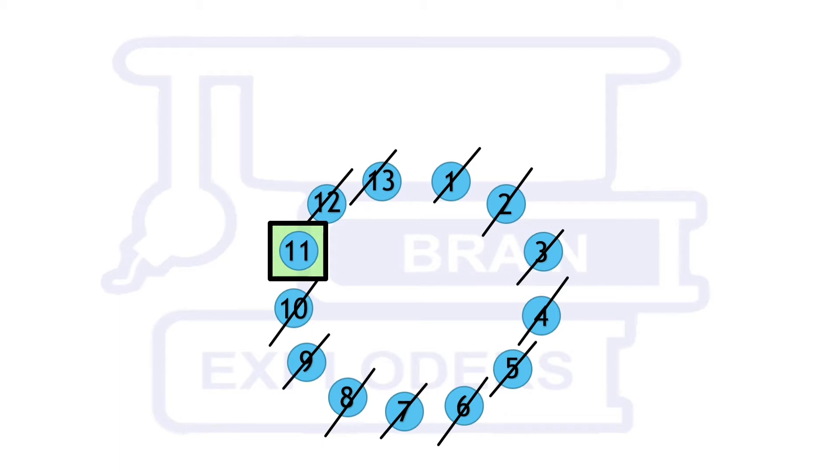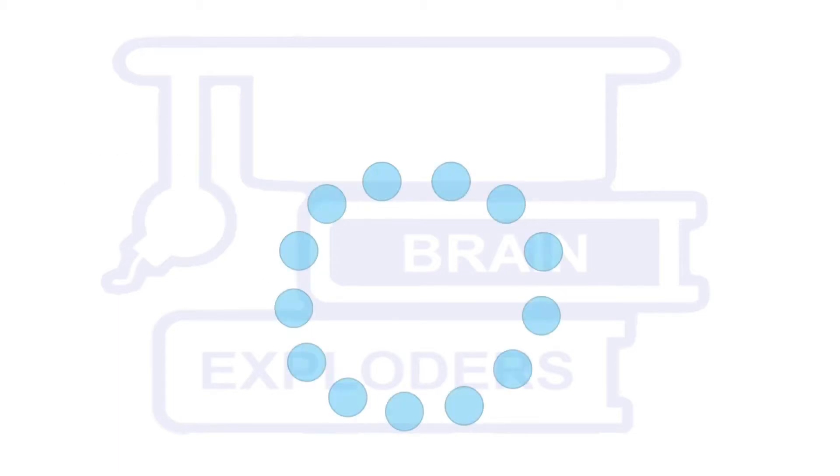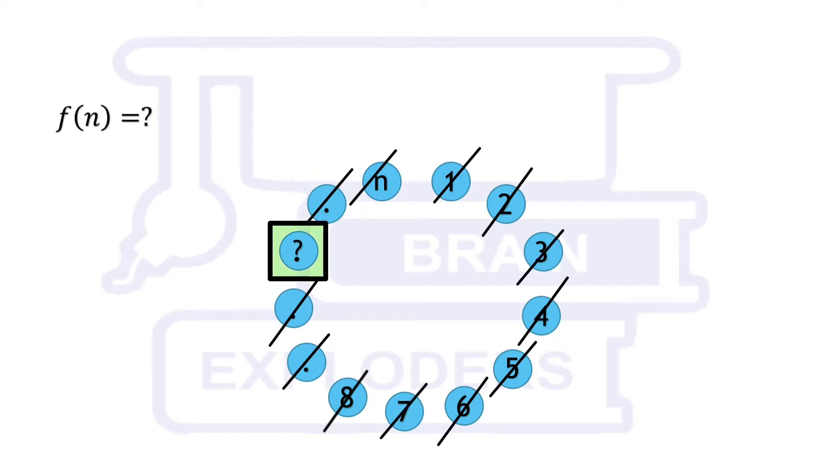Josephus wanted to be the last alive person and wanted to surrender instead of suicide. At what position should he sit if there were n soldiers? This problem is known as the Josephus problem, named after Flavius Josephus.